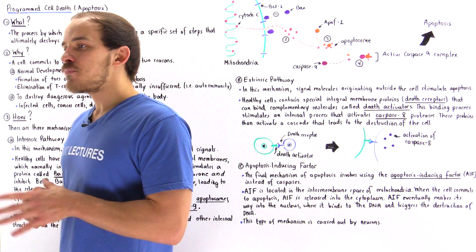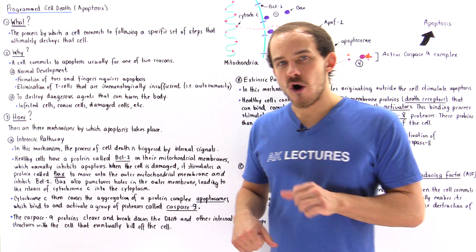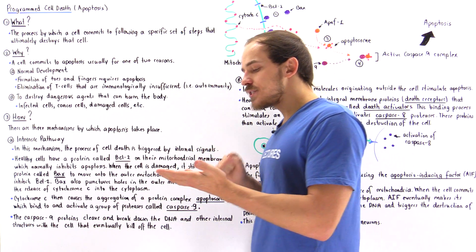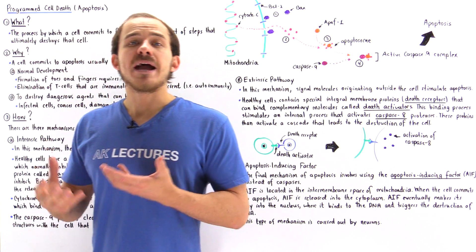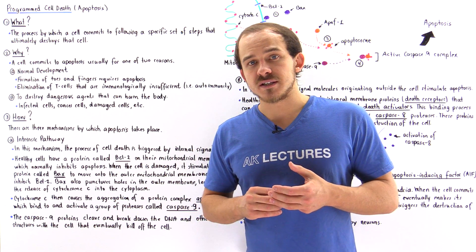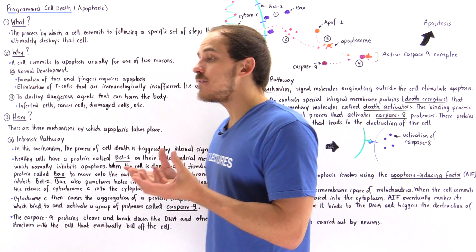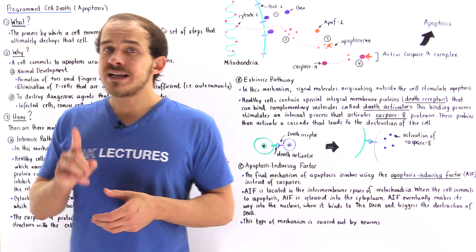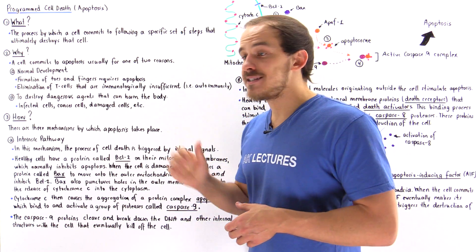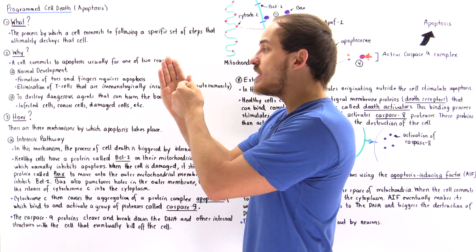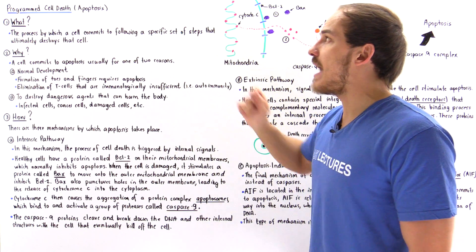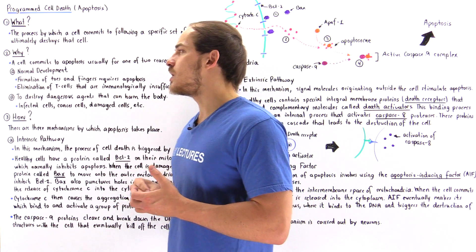The next question is, why in the world would a cell actually want to kill itself off? Well, one of two reasons. As it turns out, apoptosis is a normal process during embryological development, and it's also a normal process during the development of our immune system. When the embryo is developing inside the uterus of the mother, to actually form the fingers on the hand and the toes on the feet, apoptosis must take place naturally between the regions on the fingers. So the reason we go from this to this is because of apoptosis that takes place during normal embryological development.